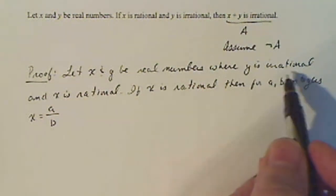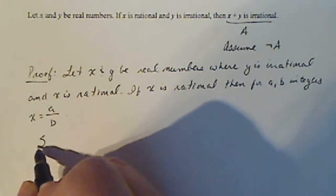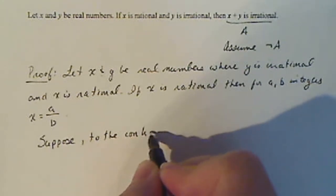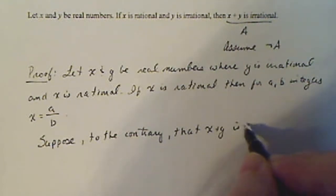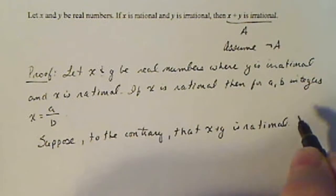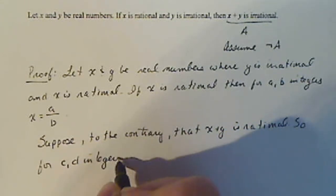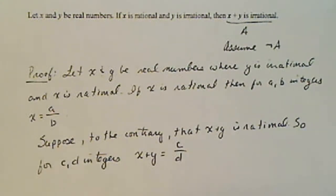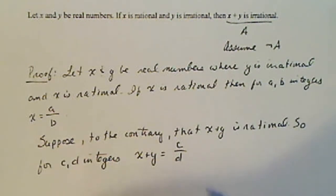With Y being irrational, there's really nothing that we can show like you can for rational. So we're just going to leave it like this. Now here comes the statement by contradiction. So I'm going to say suppose to the contrary that X plus Y is rational. So for C D integers, X plus Y is equal to C over D in the same fashion that X was A over B. X plus Y now that I'm assuming X plus Y is rational is C over D.